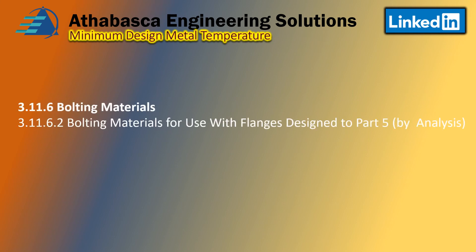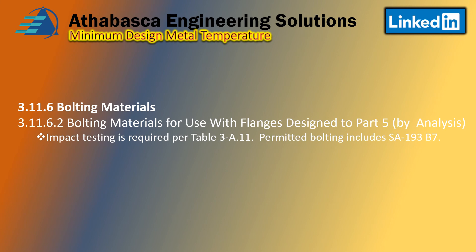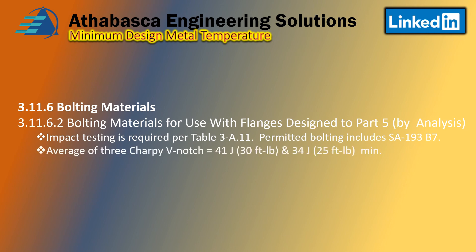For design by analysis under Part 5, impact testing is required as shown in Table 3-A.11 for bolting. Permitted bolting includes SA-193 B7, a very common bolt. When impact testing of bolting is required, there must be three Charpy tests, and the average must be at least 41 joules or 30 foot-pounds. The minimum of any of the three individual tests must be 34 joules.